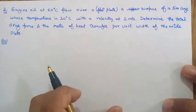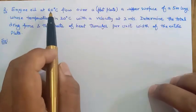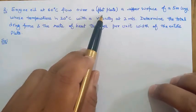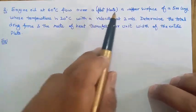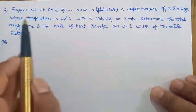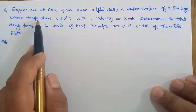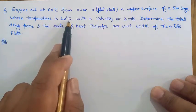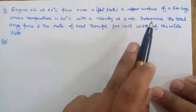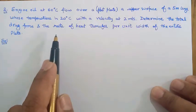Now moving to the second numerical. Engine oil at 60 degree Celsius flows over the upper surface of a 5 meter long flat plate whose surface temperature is 20 degree centigrade with a velocity of 2 meter per second. Determine the total drag and the rate of heat transfer per unit width of the entire plate.